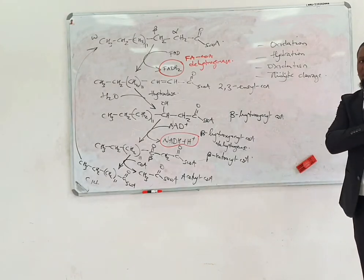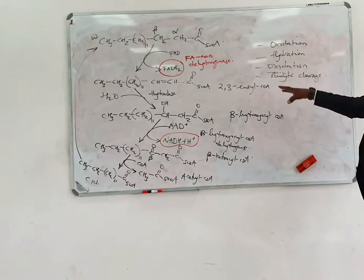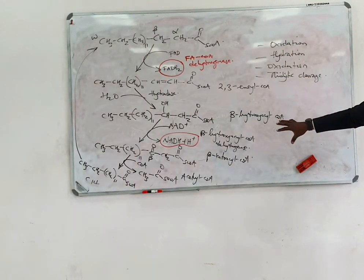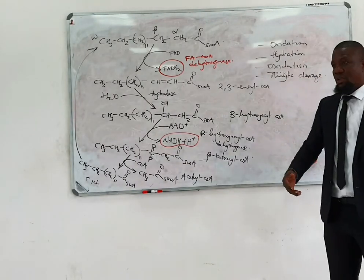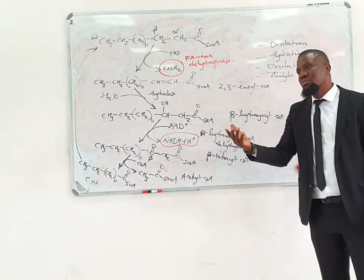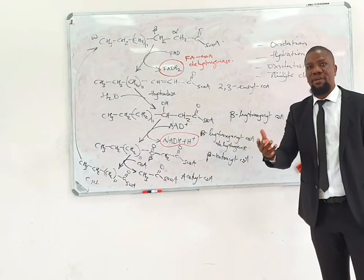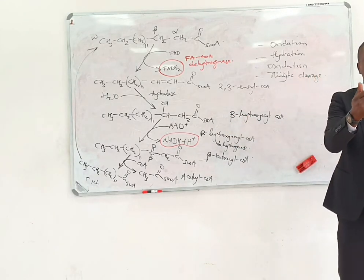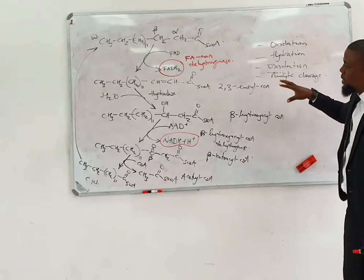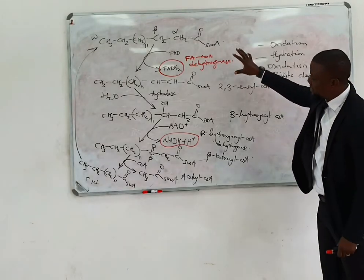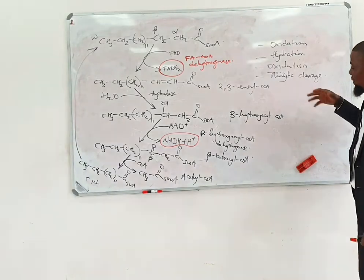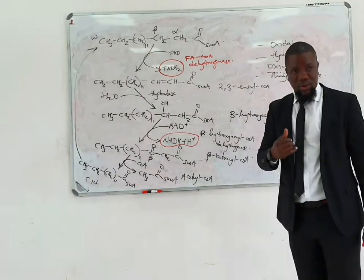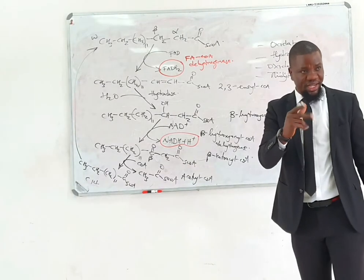That's a very good question. I think I should actually show you how to calculate the energy so that you can see it. You can report the net energy, which is preferred. Now that we have seen how energy is generated in beta oxidation, I want to show you a quick way of how to calculate the energy.